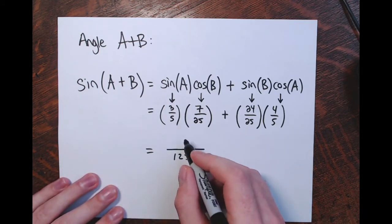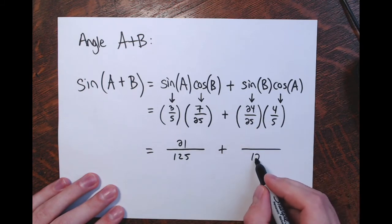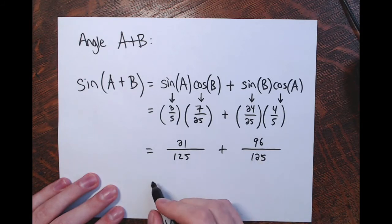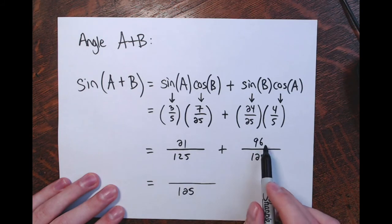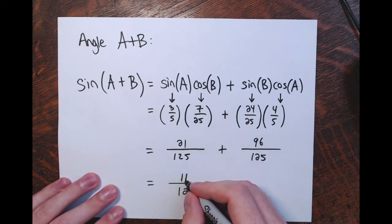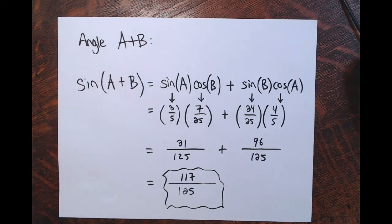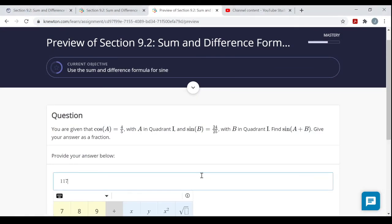Now we simplify. The first product has denominator 5 × 25 = 125, and numerator 3 × 7 = 21. The second product also has denominator 125, and numerator 4 × 24 = 96. Adding those fractions — they already have a common denominator of 125 — we just add the numerators: 21 plus 96 equals 117. So the sine of A plus B is 117/125. I don't know the actual measure of angle A plus B, but based on the given information, the sine of their sum is 117 over 125.